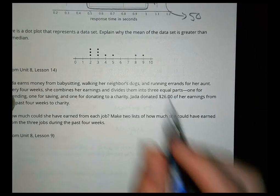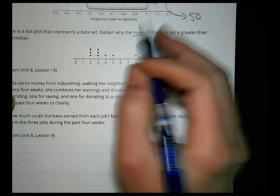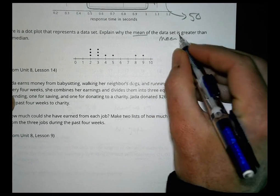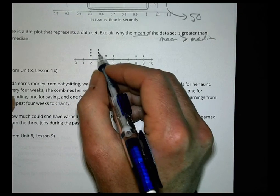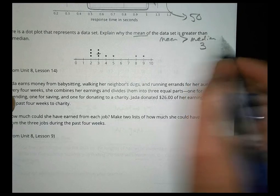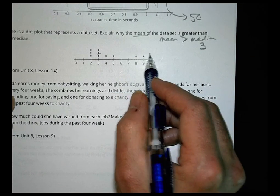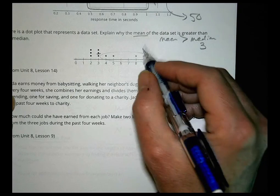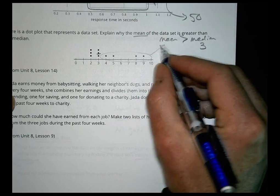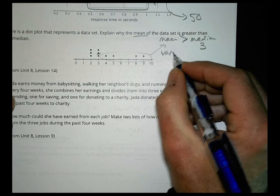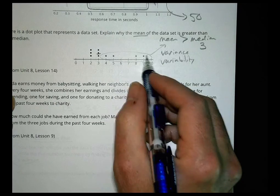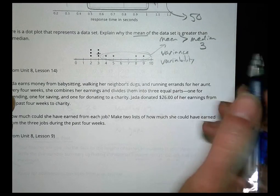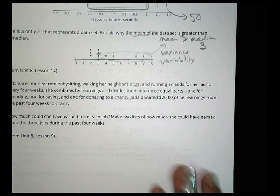And the next one. Here's a dot plot that represents the data set. Explain why the mean of the data is greater than the median. So why would the mean be greater than the median in this picture? You have ten values, which means our median is about three. And the mean is larger. The reason it's larger is because we can see the data is spread out. The mean is going to be larger because there is a lot of variance or variability in our data set which is going to make the mean larger. These values here are going to increase the mean. Where the median is also a measure of center, it's going to stay about the same.